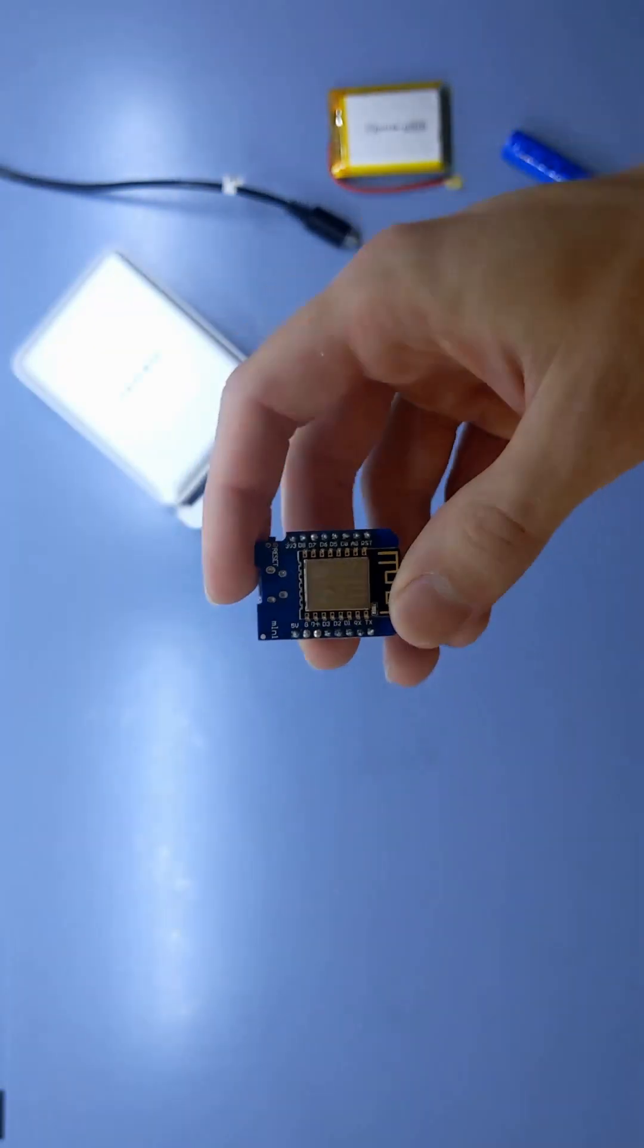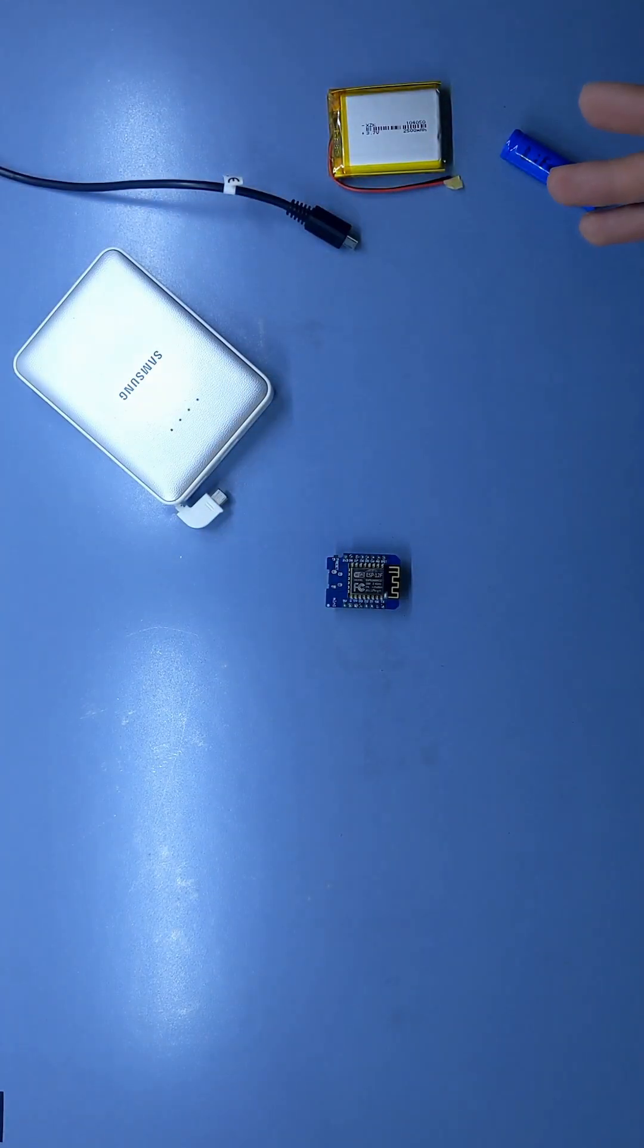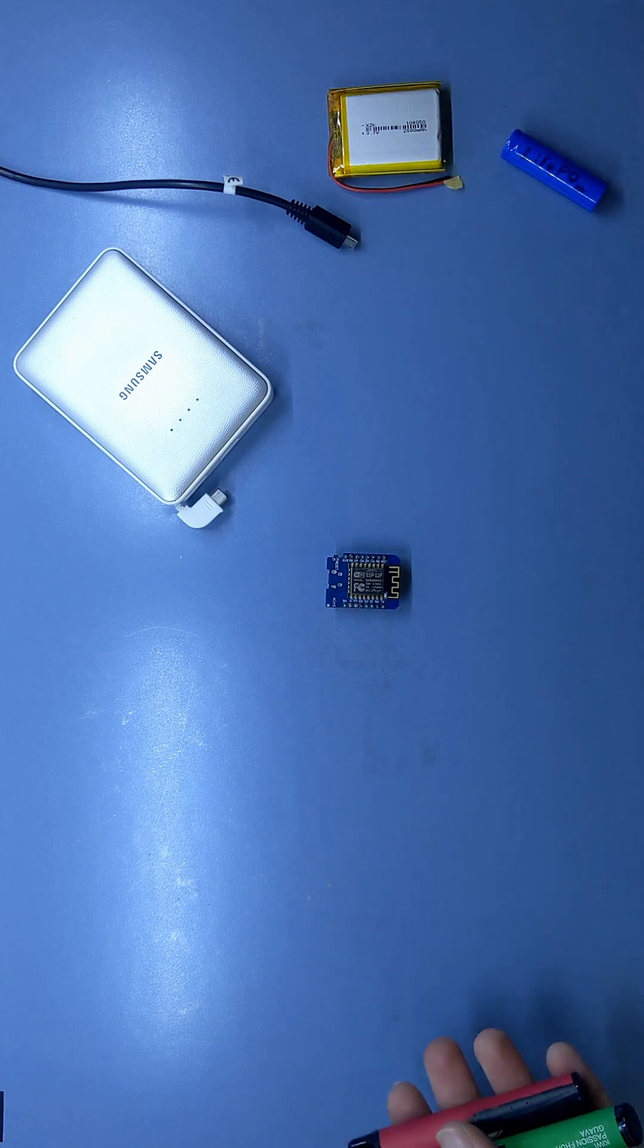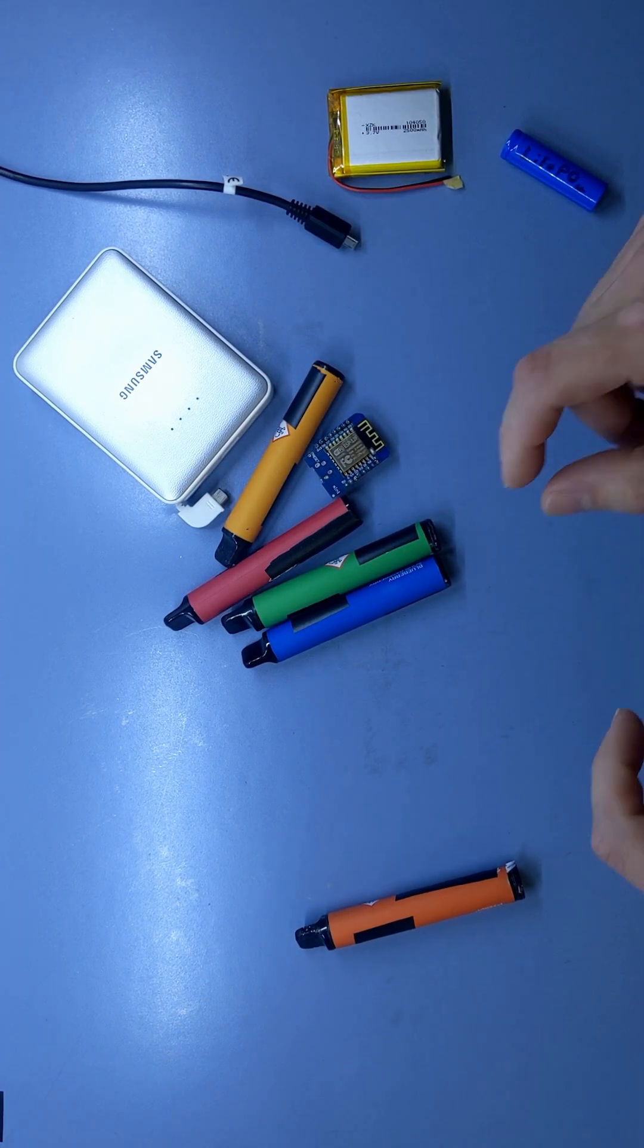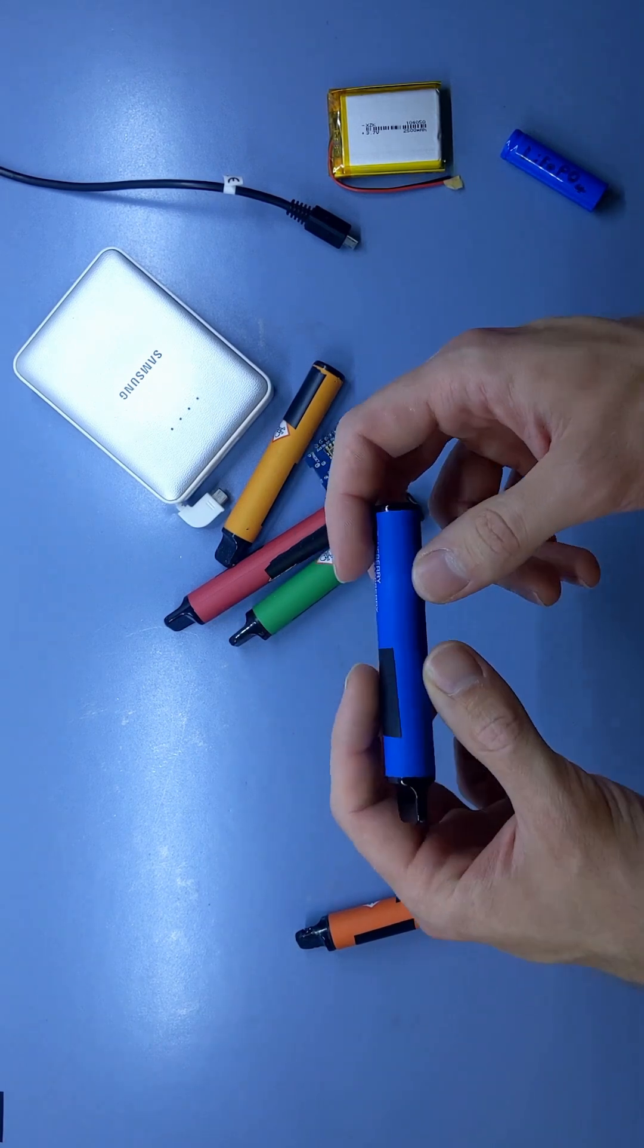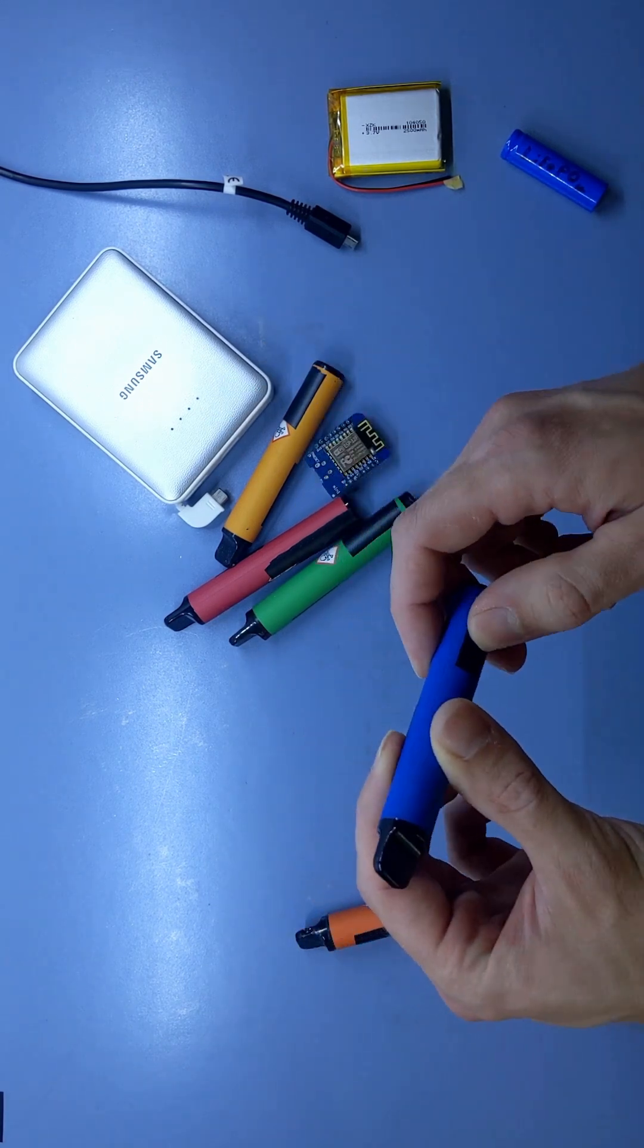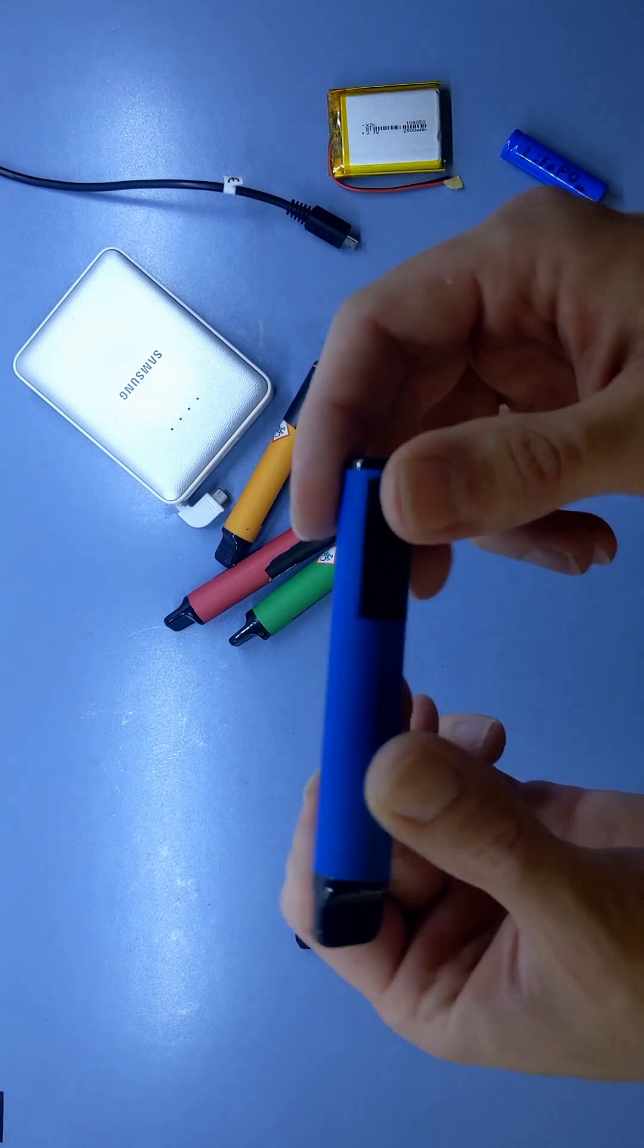Many of my ESP-based projects run on 3.3V and are quite easy to power, but people keep dropping these single-use devices around town and I really hate throwing away a perfectly good lithium cell, so today we are going to build a DIY 3.3V power bank from them.